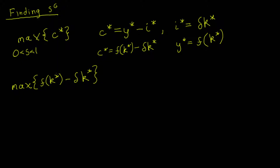To maximize this function, recall that at an extreme value the derivative of a function equals zero. So we take the derivative and set it equal to zero. We get the derivative of the production function minus delta equals zero — this is our first order condition. We can use this condition to find the level of capital associated with the golden rule, and once we find that level of capital we can find the golden rule savings rate.